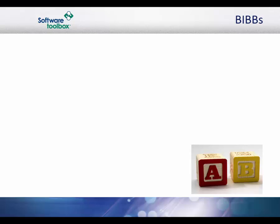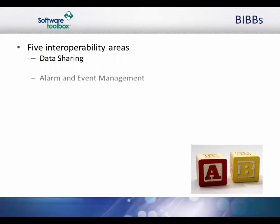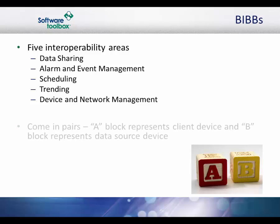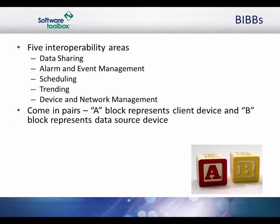There are five interoperability areas that represent the capabilities needed by building operators to perform the everyday activities of running a building. These include data sharing, alarm and event management, scheduling, trending, and device and network management. Eventually, the BACnet protocol was developed to incorporate these areas through the use of small building blocks so that, for each functional area, a specifier can select from a range of capabilities that best meet the intended application of the device.